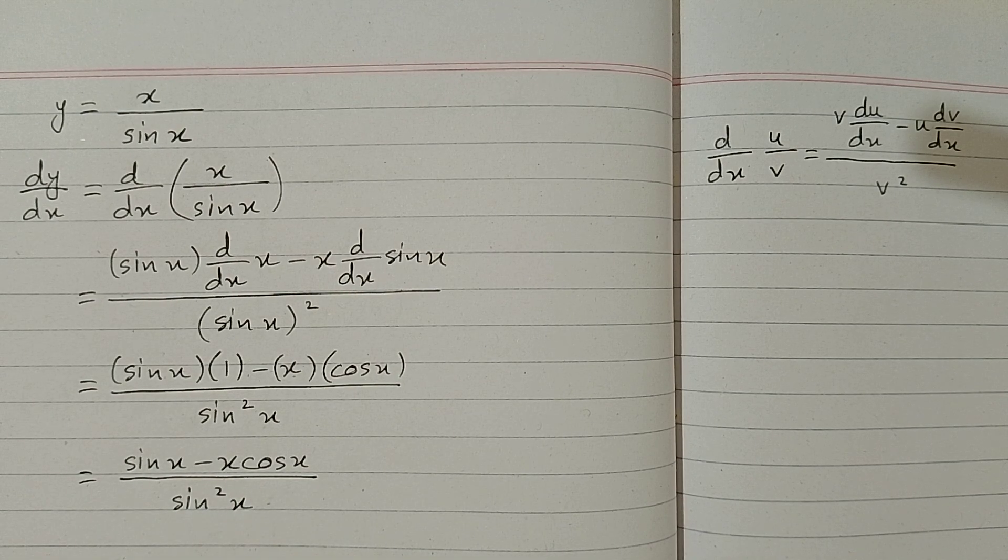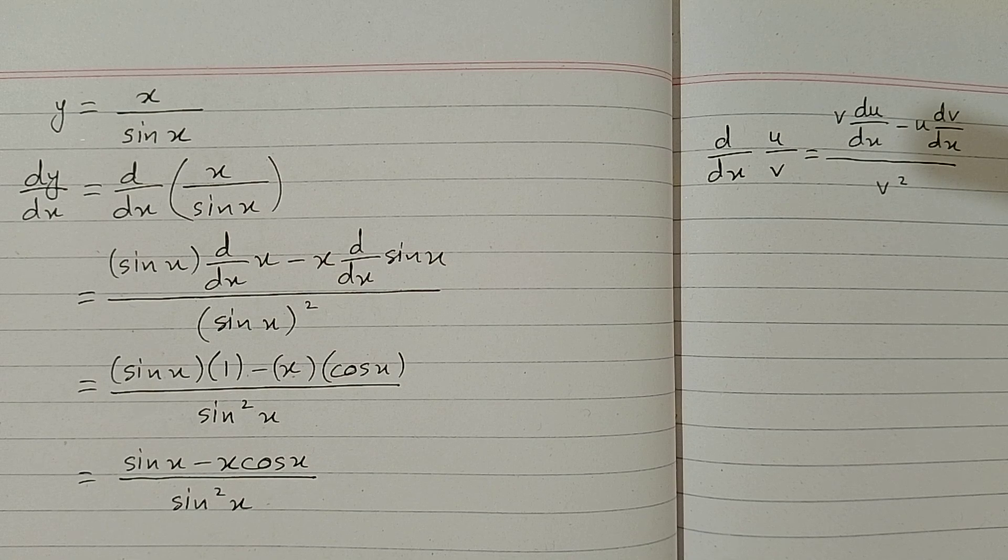So the derivative of x over sin x is equal to sin x minus x times cos x over sin squared x.